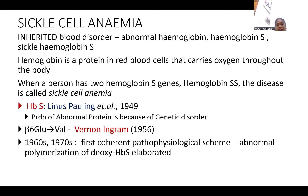When a person carries two recessive forms of the gene, the disease is called sickle cell anemia. This recessive form of the gene was reported by Linus Pauling and his group in the year 1949.